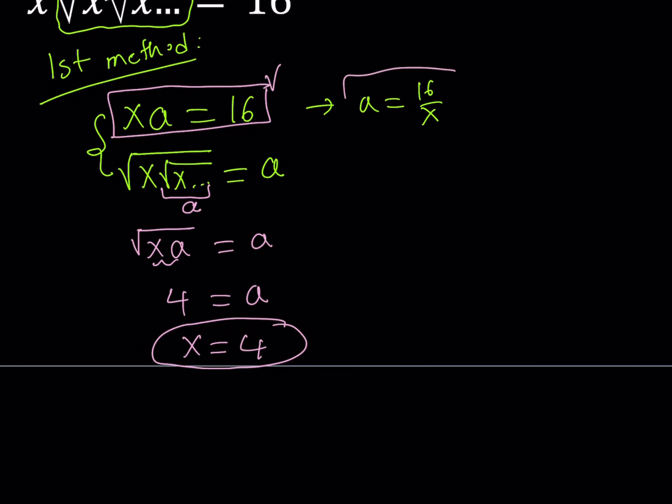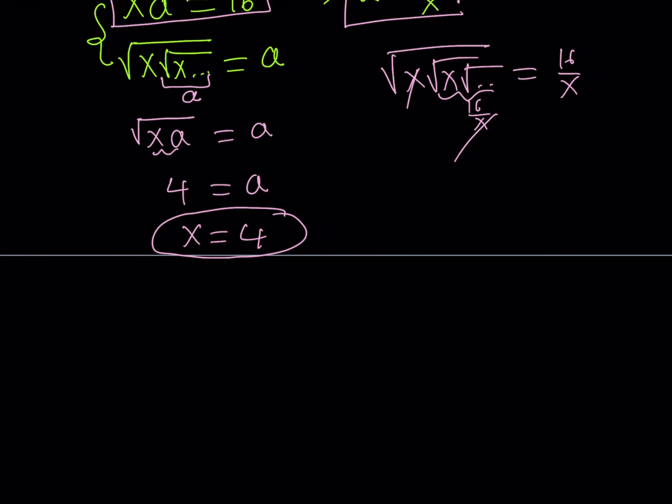You could also use this method. If you did, then you would get something like x times the square root of x times blah blah blah equals 16 over x. And this would also be 16 over x. And then x would cancel out. The square root of 16 is 4. So on and so forth, right? It gives you the same thing, pretty much.